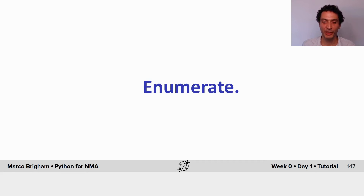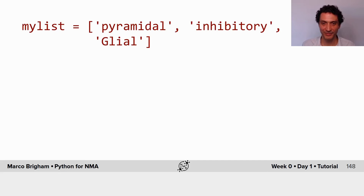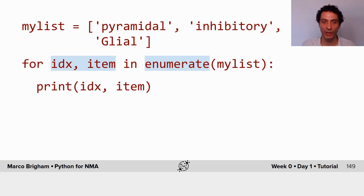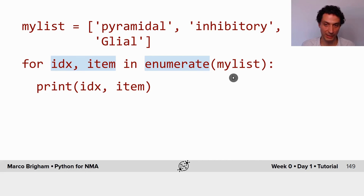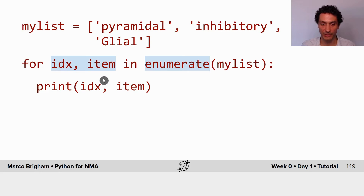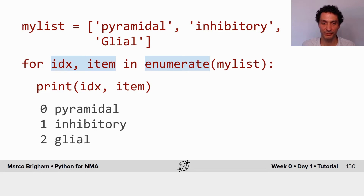Enumerate — this is one of my favorite constructs in Python. It's useful when you have a container like a list and you want to retrieve both the items and their indexes. Using a for loop with enumerate on a list, at each step enumerate will yield an index and the item, which you can then print. This is very useful because you don't need to keep track of indexes inside the for loop — enumerate gives them to you for free.